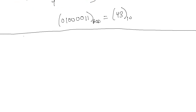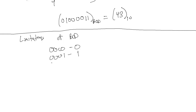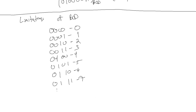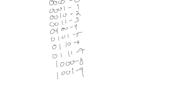One of the limitations of binary coded decimal is that we can only count 0 through 9 in each group. If we wrote out 0 through 9 in binary coded decimal, you can actually count to 15 with 4 binary digits.